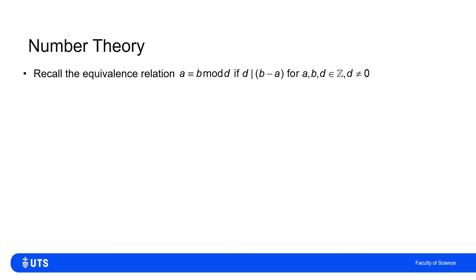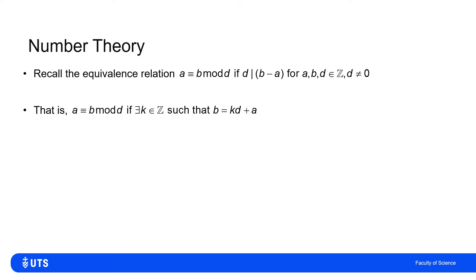Working with this definition: if we know that a is equivalent to b mod d, then we know there exists some other integer k such that b can be written as k multiples of d plus a.